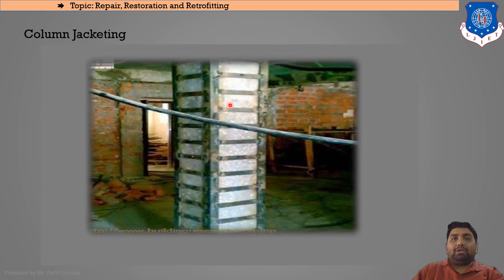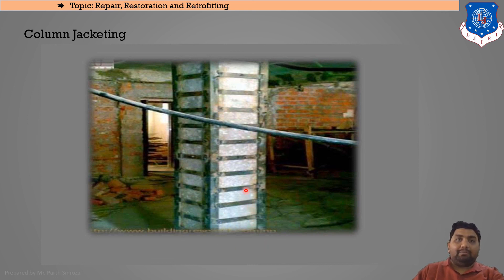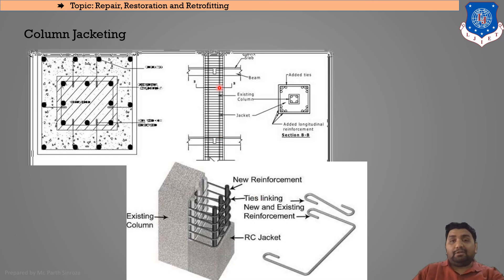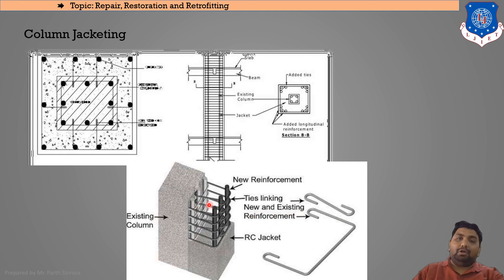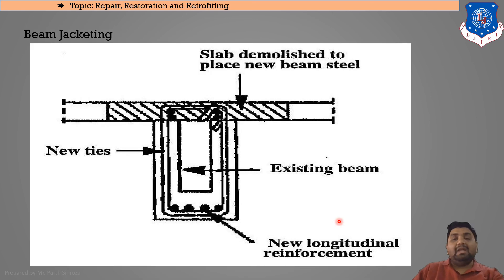Column jacketing: steel bars are used to cover the old deteriorating column, increasing its strength. This is the existing column and the RC jacket uses new reinforcement tied via a stirrup basket — ties linking new and existing reinforcement — so the strength of the old column is transferred to the new jacketed column.